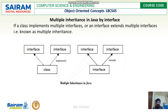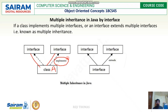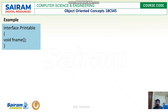Multiple inheritance can be done only using interfaces. A class implements interfaces, whereas an interface has to extend another interface — an interface cannot implement another interface. This is the way by which multiple inheritance can be achieved in Java.